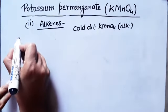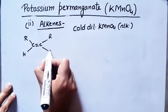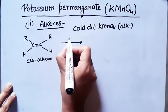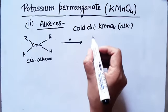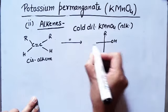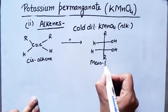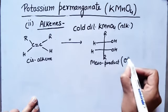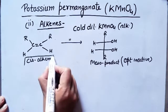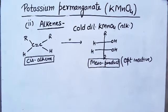Cis diols are formed with cold dilute alkaline KMnO₄. Now if you take a cis-alkene and react it with cold dilute alkaline KMnO₄, then a meso product is formed. The meso product is optically inactive.